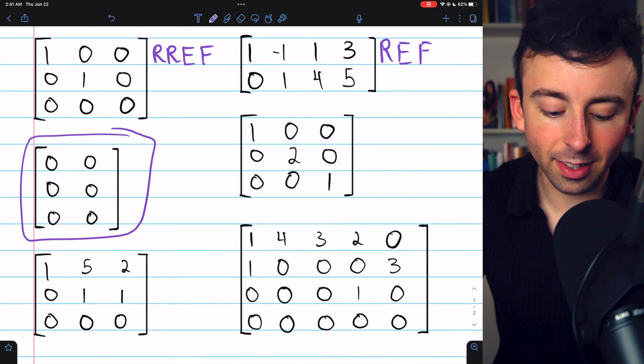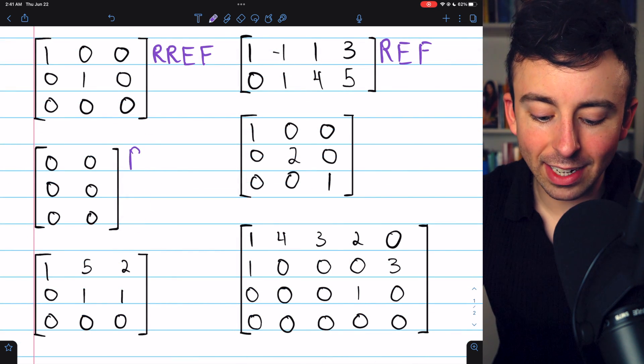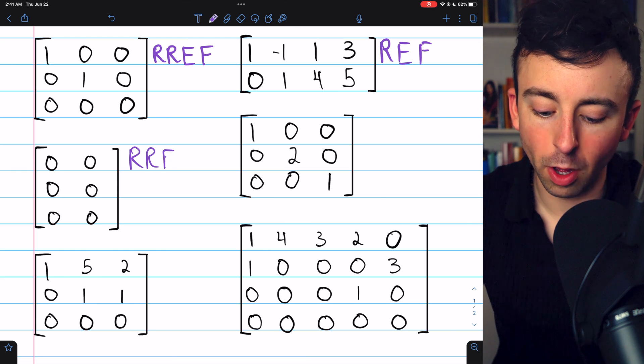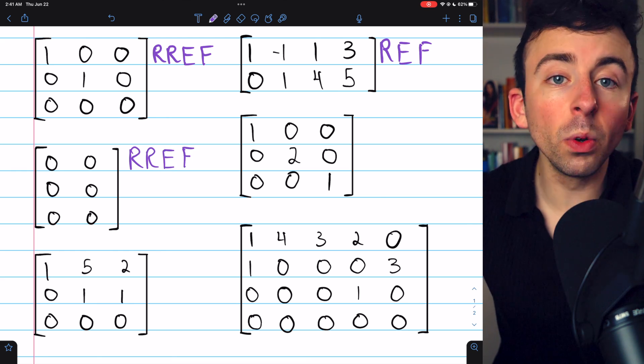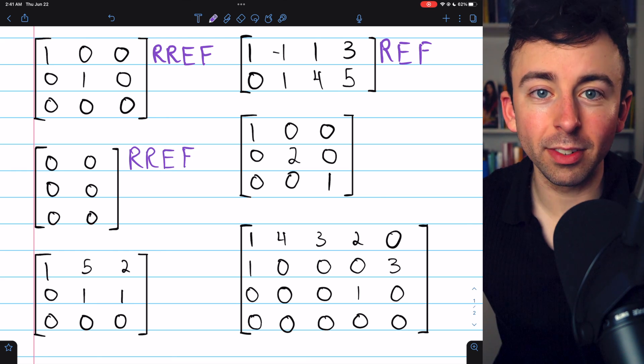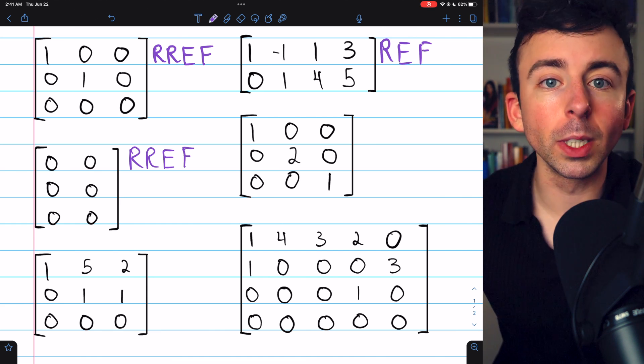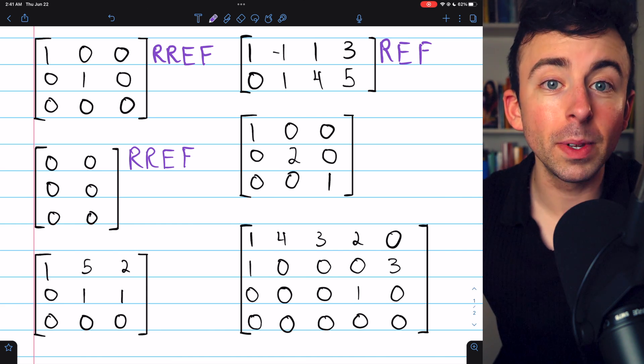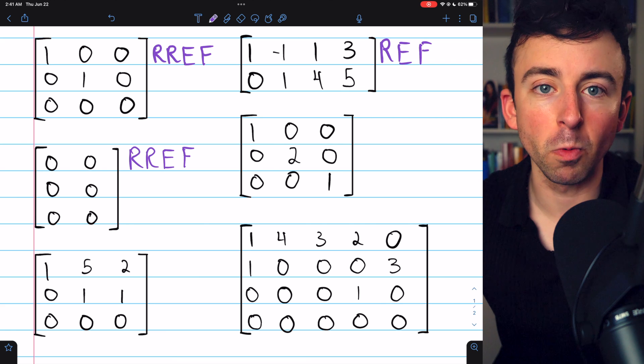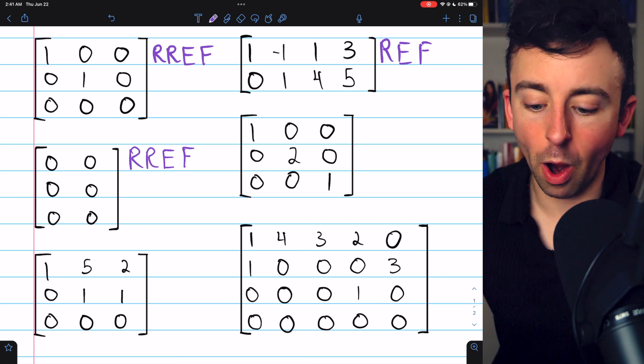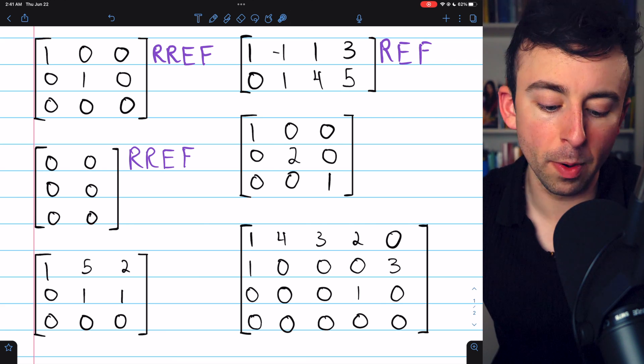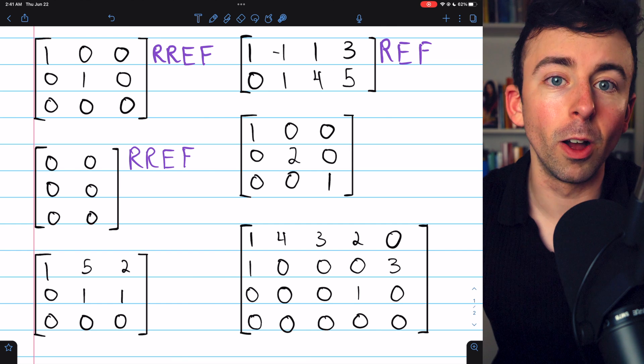This next matrix is the zero matrix and it is in reduced row echelon form. It has only zero rows. So it's trivially true that the zero rows are below the non-zero rows because there are no non-zero rows. None of the other requirements for reduced row echelon form are really applicable because it's all zeros.